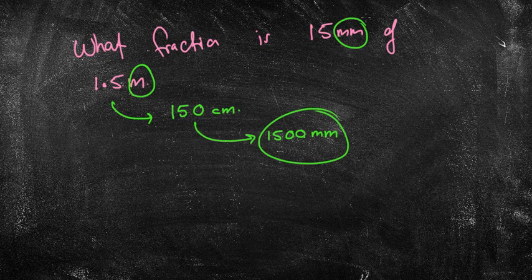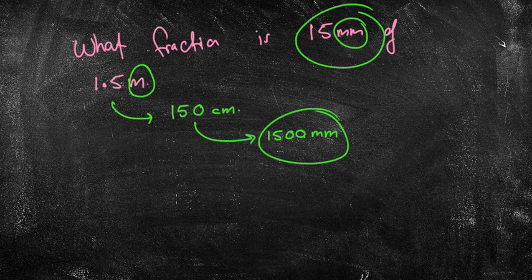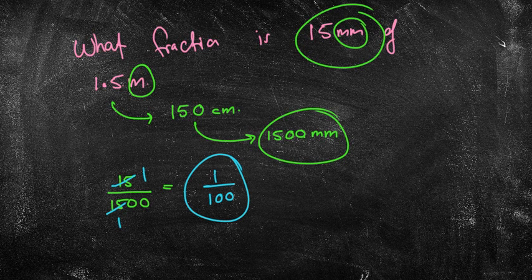Now, I've got that in millimetres. I've got this in millimetres. So, what fraction is 15 of 1,500? Well, 15 of 1,500. Okay. Well, 15 goes into 15 once. 15 goes into 15 once. We get 1 over 100. That's my simplified fraction. That is simply it, guys.